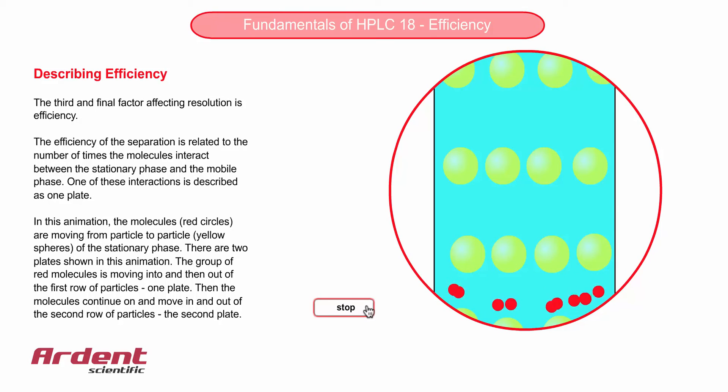The more partitions that occur in the column, the less chance the collection of molecules can spread apart between partitions. The spreading apart of the molecules is known as dispersion.